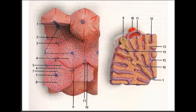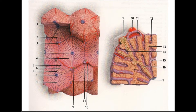Number four is pointed to the liver acinus. Number five, which I'll color in yellow, is called zone one. Number six is called zone two, and number seven is called zone three.